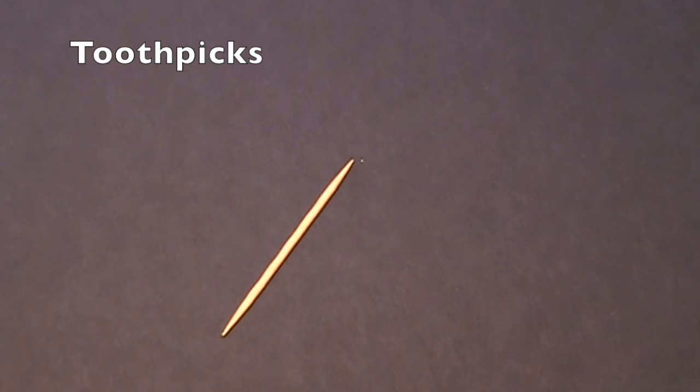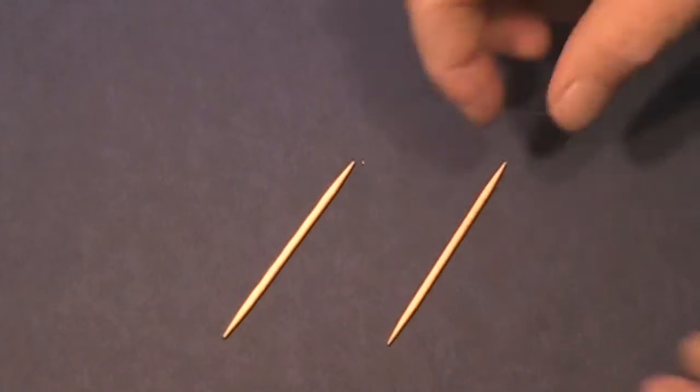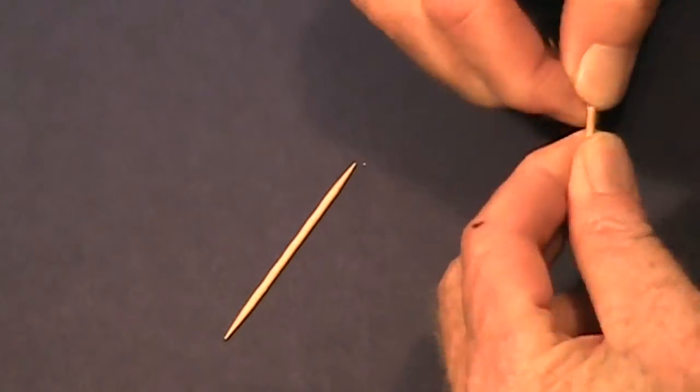Now, you need some toothpicks. You can get three or four, and what I want you to do is break each one in half. Find three that are about the same size. We'll use those for flag posts. Now, we're going to paint them.